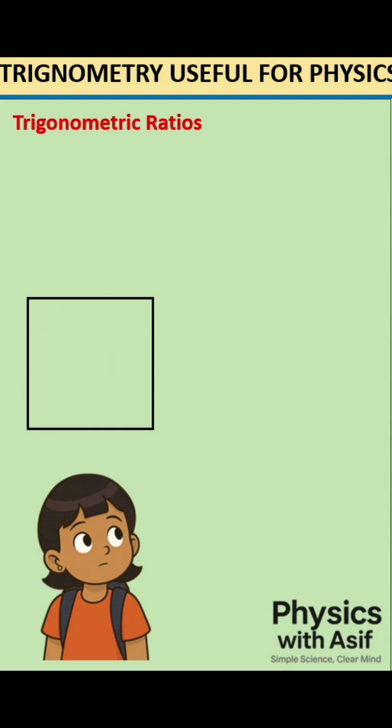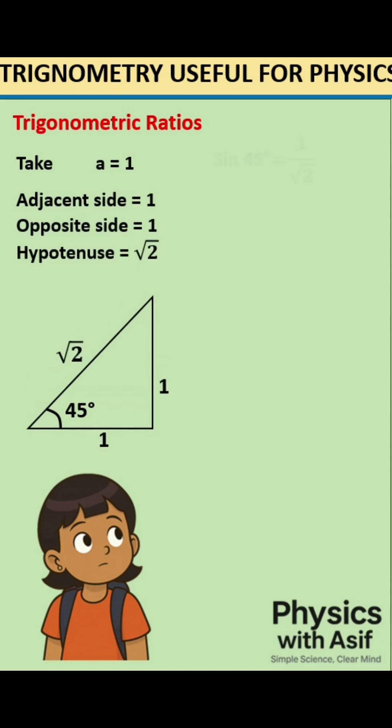Take a square of side A. Now cut it diagonally, you'll get a right-angled triangle. Let's take A equals 1. Then the hypotenuse becomes square root 2.